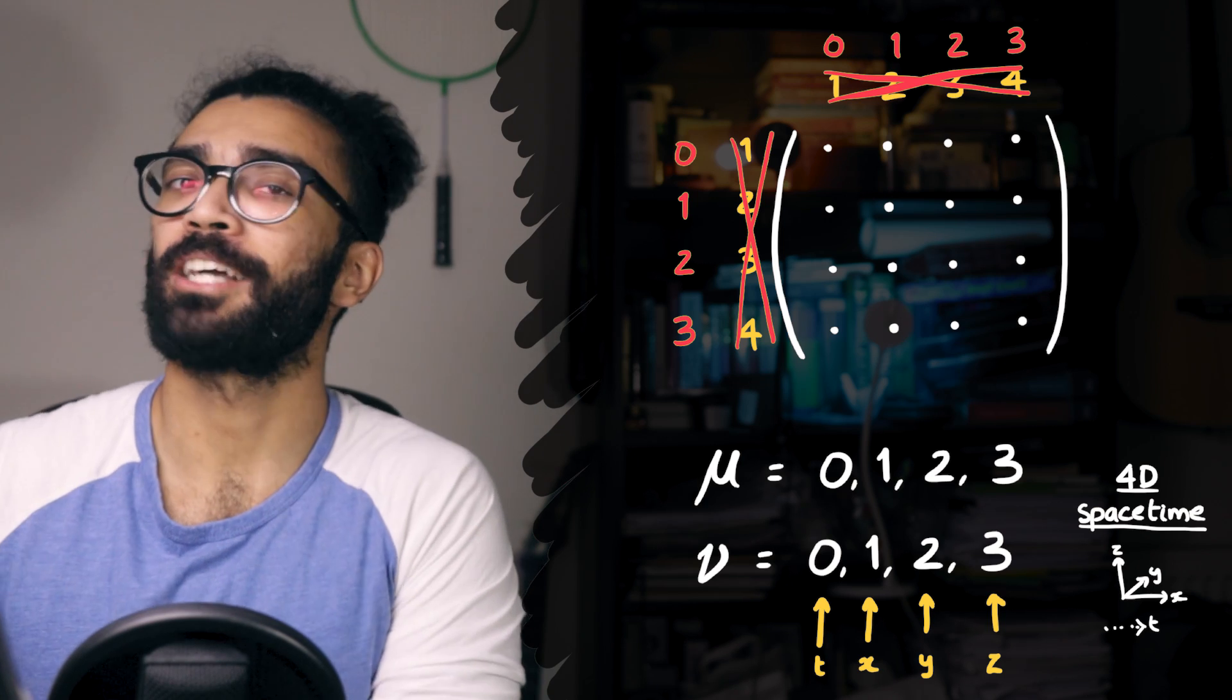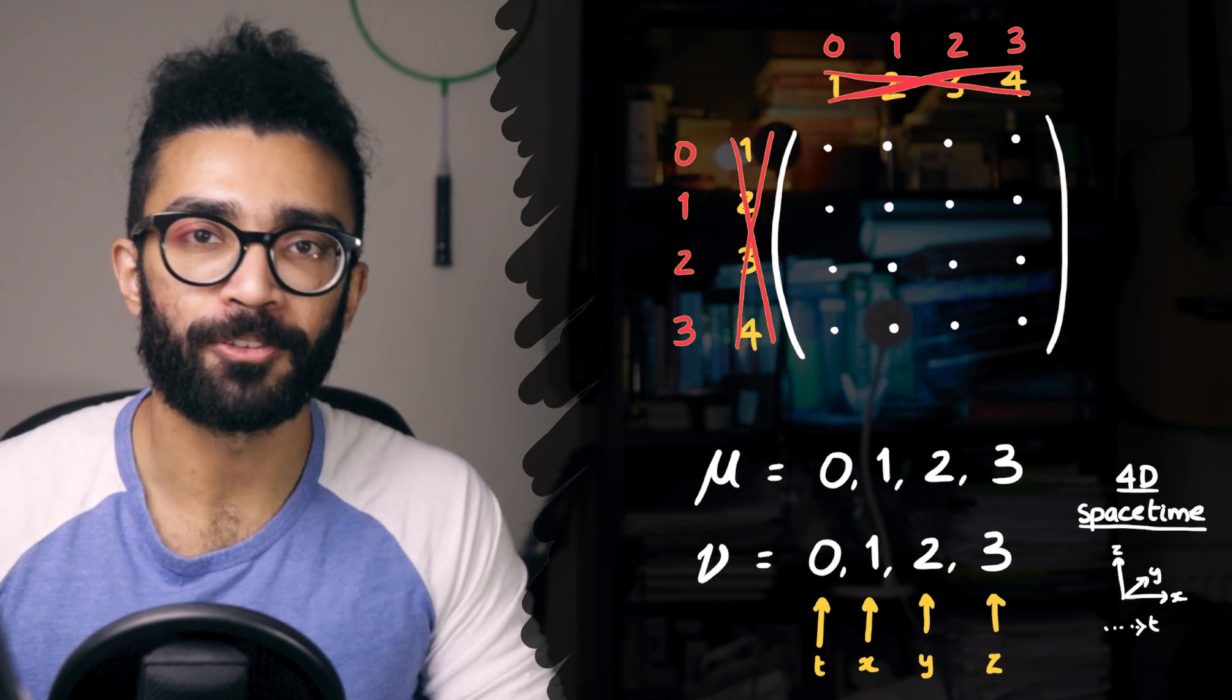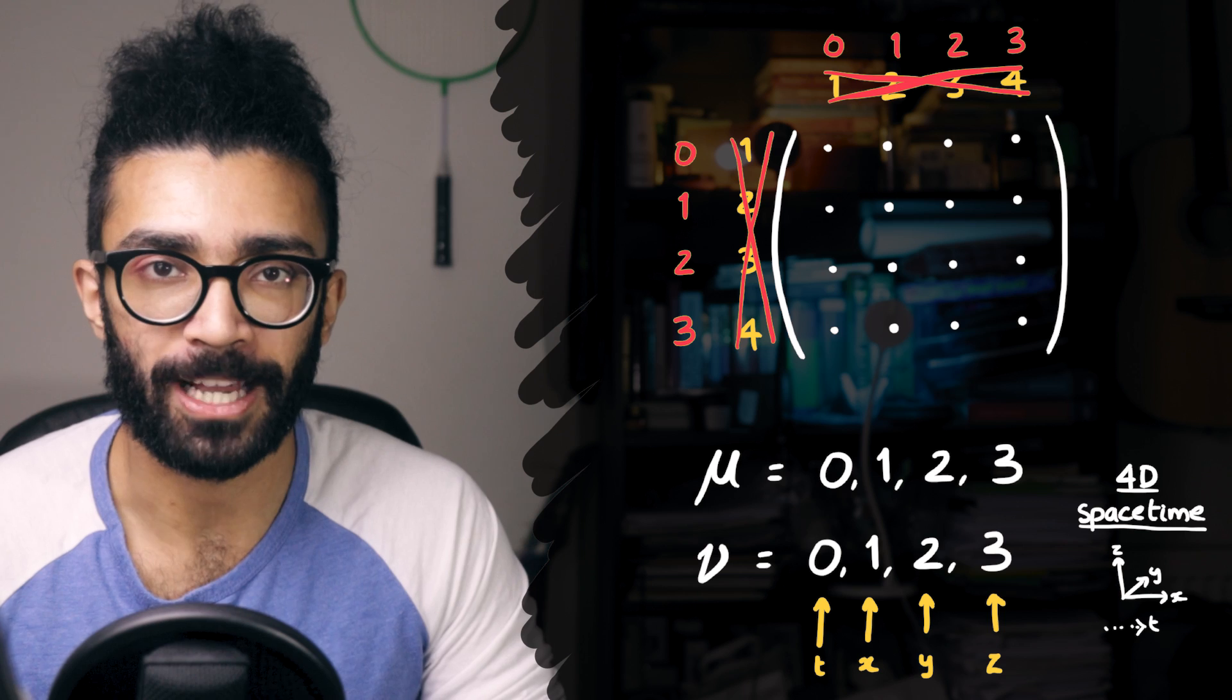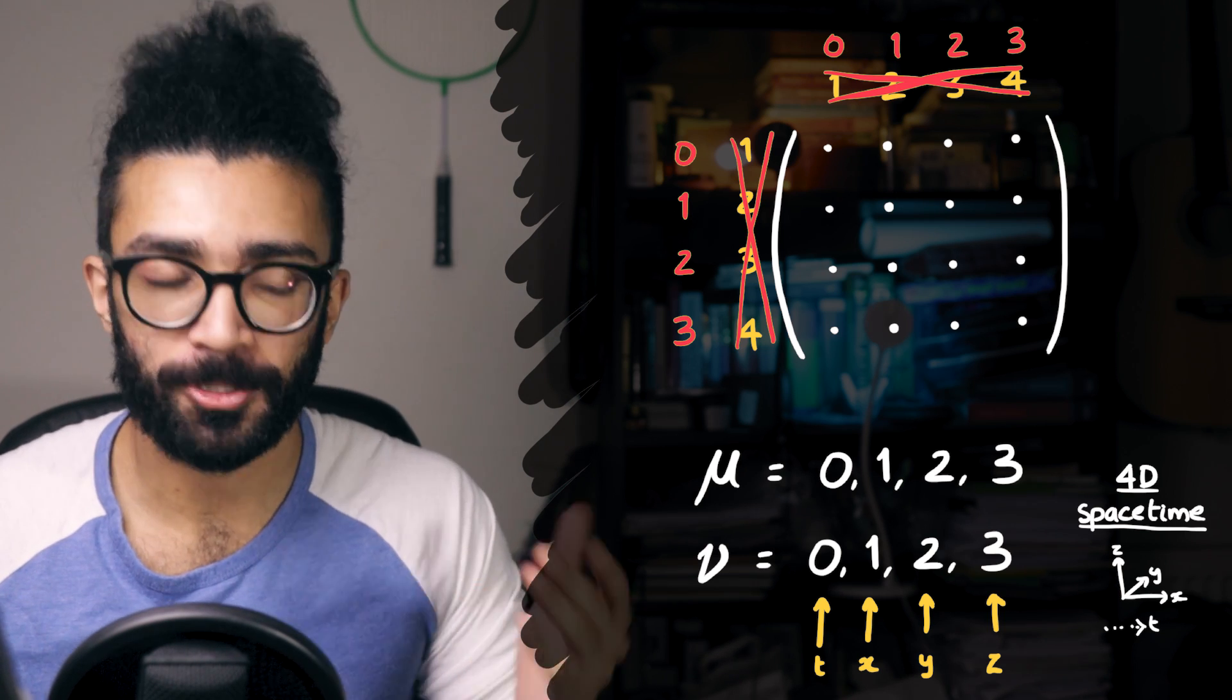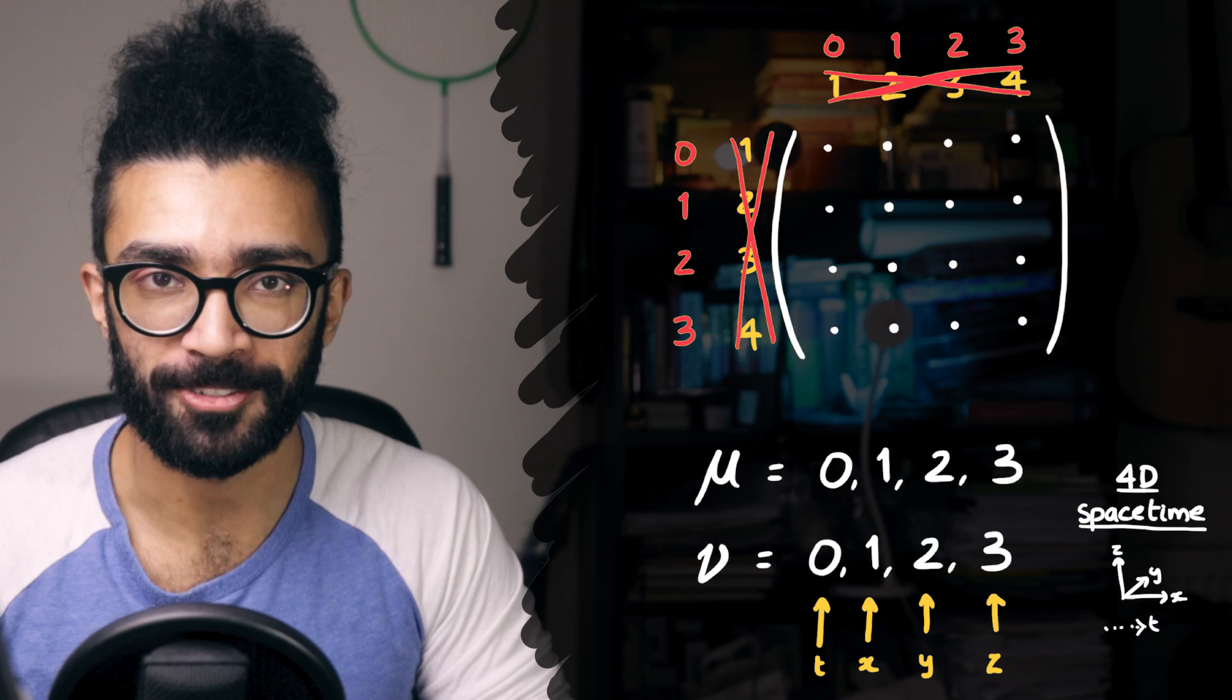0 refers to the time dimension, and 1, 2, and 3 refer to the spatial dimensions, which we can call x, y, and z. I'm paraphrasing, of course, things are a little bit more complicated, but for now, that's all we care about.